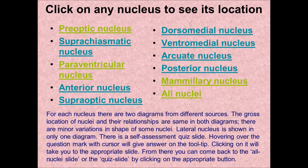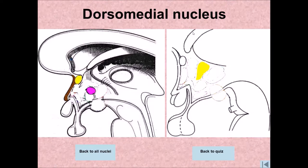This is the menu screen. Let's say the student wants to see what the dorsomedial nucleus is. He clicks on it and it takes him into the dorsomedial nucleus, where he can see the location and the shape of the dorsomedial nucleus.